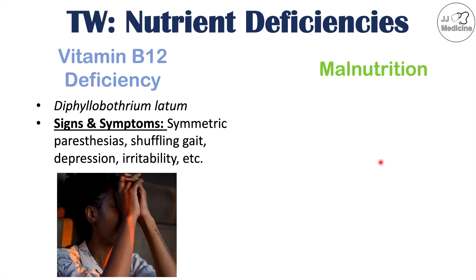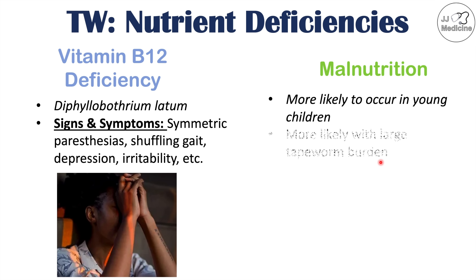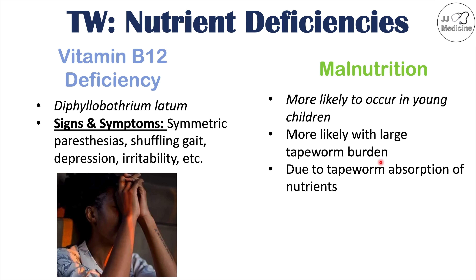Overall malnutrition can occur from a tapeworm infection. This is more likely to occur in young children and with large tapeworm burdens. If there are many tapeworms in the infected patient, each of them absorbs nutrients from the gastrointestinal tract, preventing the patient from getting access to those nutrients. So the tapeworm itself is absorbing and stealing nutrients from the patient.